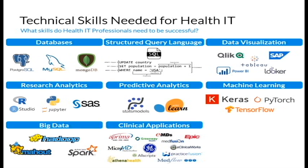Examples of health information management systems include electronic medical record systems and electronic health record systems, also known as EMR and EHRs, scheduling, billing, and practice management systems, patient portals, and remote patient monitoring systems.